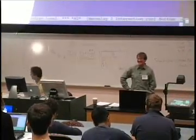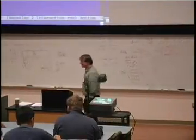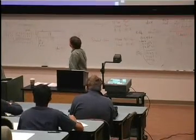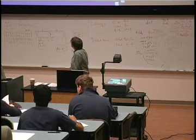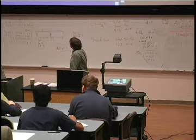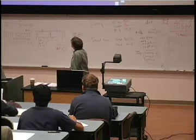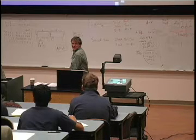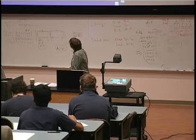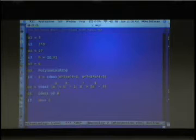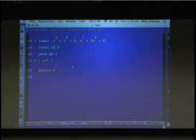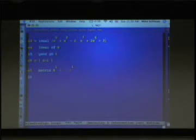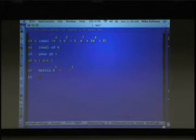Bernd has just sat down with the keyboard. So I'm not exactly sure what to say about all of this, but Bernd is doing a simple ideal in one variable. In Macaulay 2, you use blackboard bold: QQ is the rationals, ZZ is the integers, and so on. I wonder what the Gröbner basis would be like of this ideal. X minus one. So if you ever run into anybody who doesn't know what the Euclidean algorithm is, the simplest way to tell them is: it's just Gröbner basis in one variable.